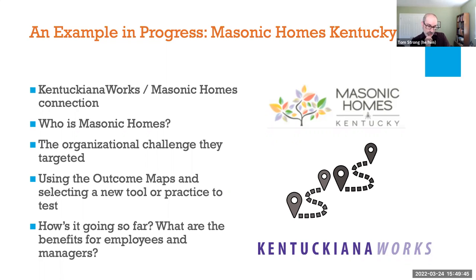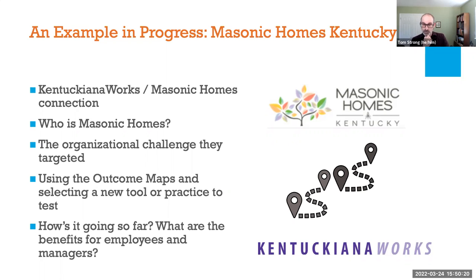Someone asked whether the maps work in worker cooperative settings. Tom says there's no reason why they wouldn't. The only caveat is that a lot of worker co-ops in the United States tend to be smaller organizations, and if you have just 10 or so employees the maps may not be as necessary because you can just talk directly and co-create a solution. However, there are large co-ops — the largest worker co-op in the US is Cooperative Home Care Associates, a long-term care provider in New York City with over 2,000 employees — they could certainly use these maps to figure out new improvement processes.